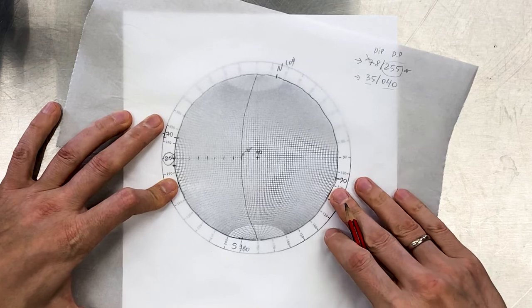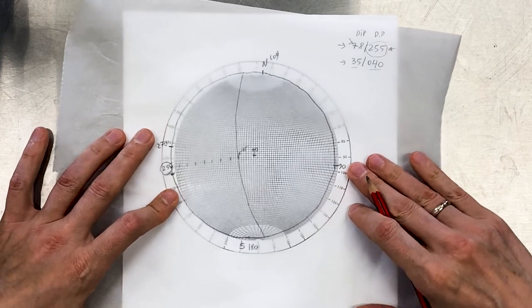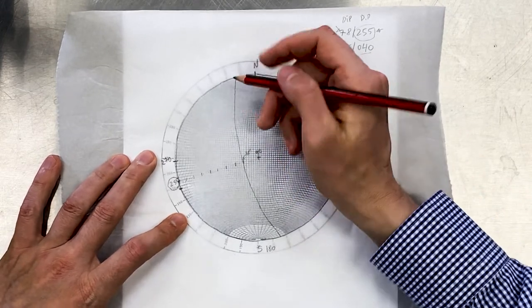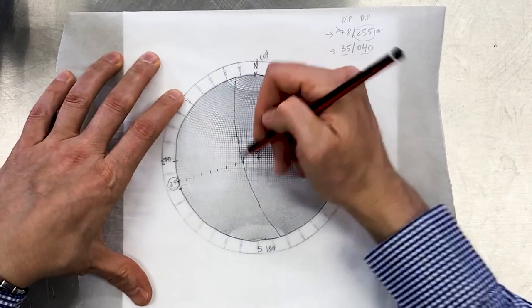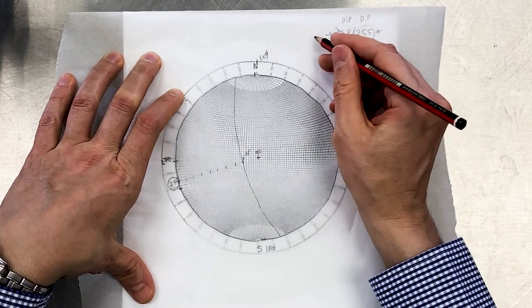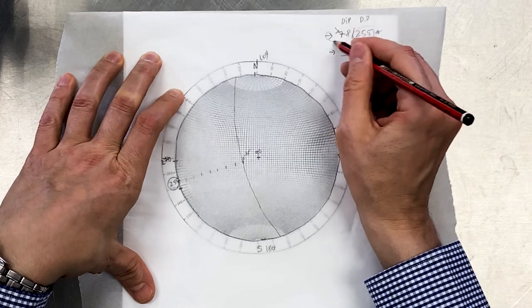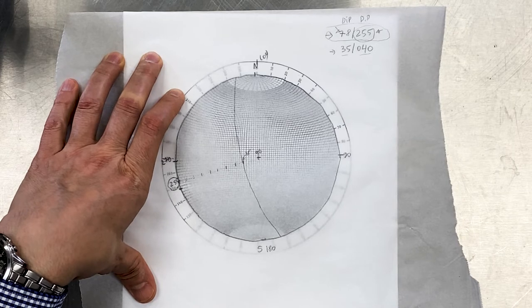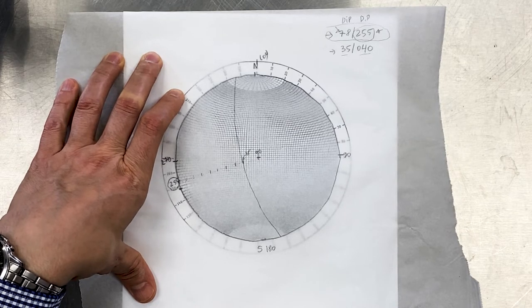What we do next, we rotate the tracing paper to its original position. And now we see this great circle that will represent dip and dip direction of this first joint set, which is 255 dip direction and 78 degrees of dip.